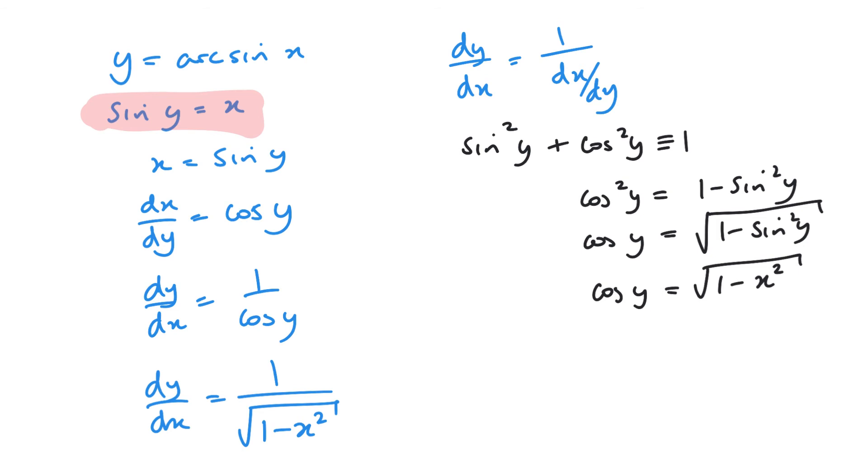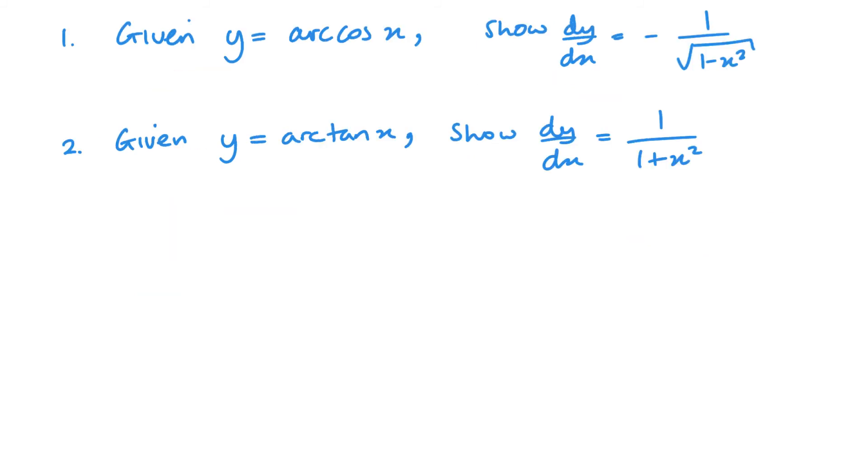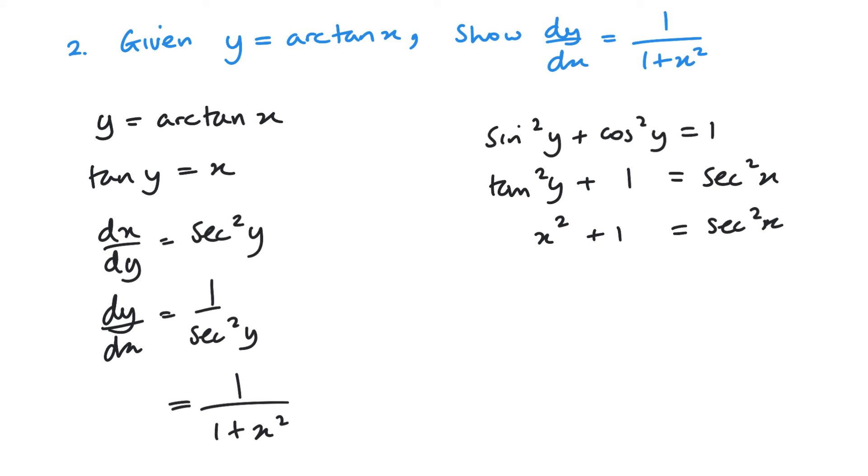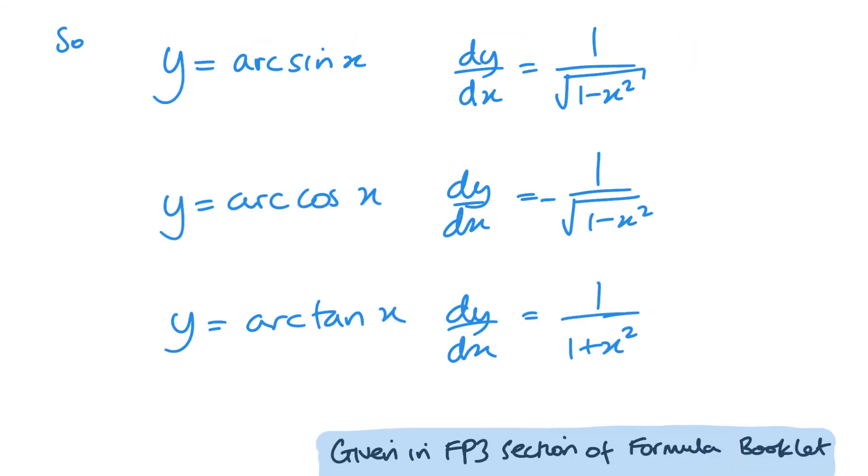Now I'll let you work out arccos and arctan and then I'll put that afterwards. You'll find these in the FP3 section of the formula booklet rather than the P3 section and again it's really about learning how to do the skills, that's what's going to help you. So being able to differentiate these rather than knowing just what they are differentiated is the key thing here.